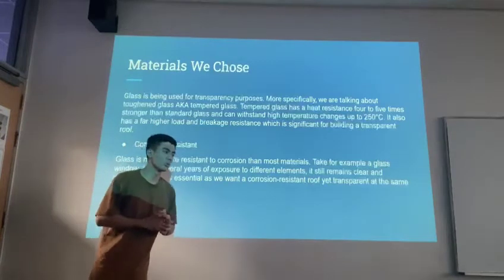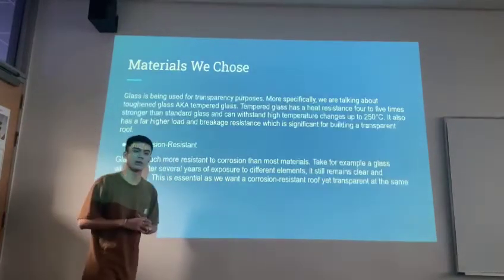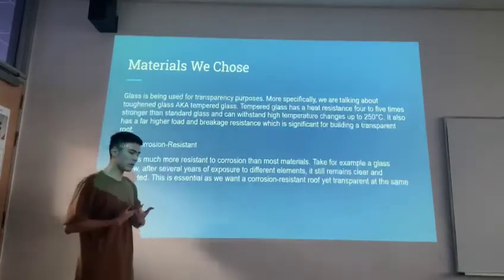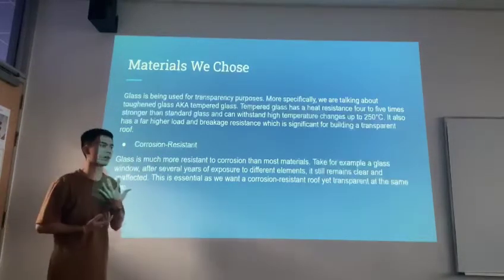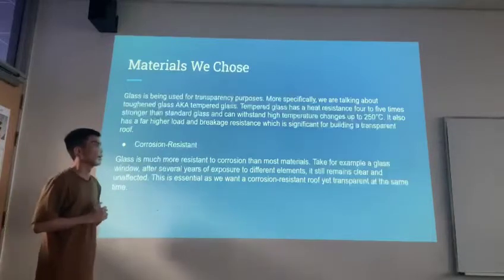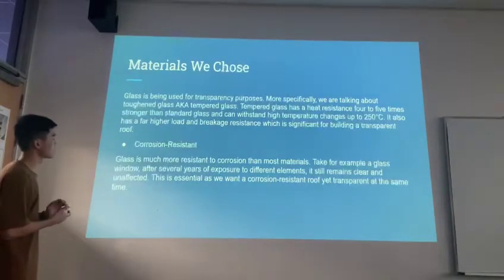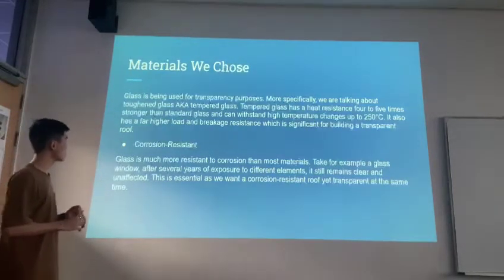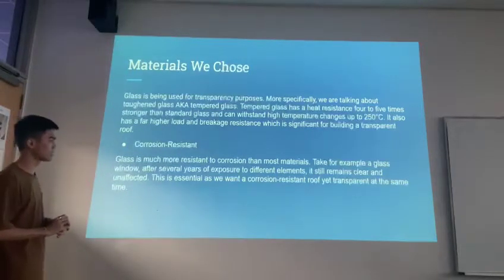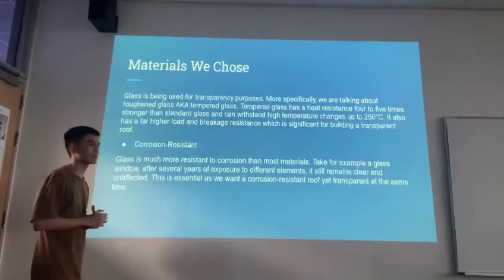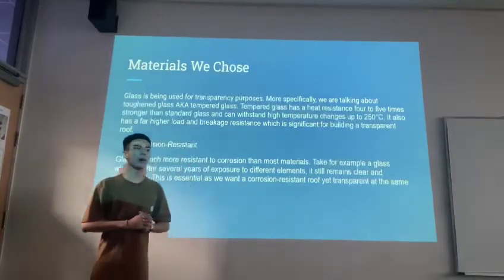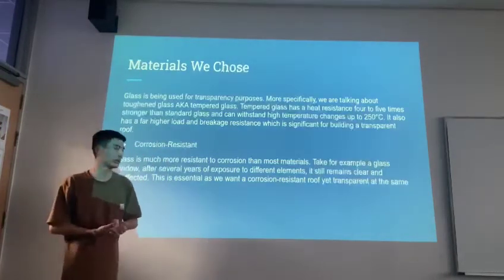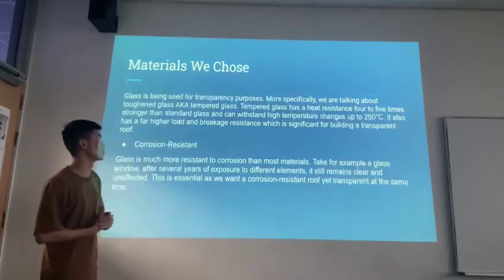Glass is also being used for our roof because we want it to be transparent. More specifically, we are talking about tempered glass. Tempered glass has high resistance and can withstand great amounts of pressure or damage, and it has a far higher load and breakage resistance as well. Glass is also resistant to corrosion — for example, a glass window used at home, after being exposed to several elements, still remains clear and unaffected. That's why we decided to use tempered glass for the roof.